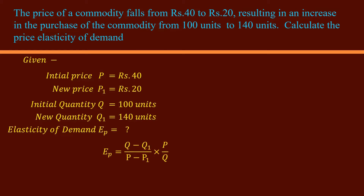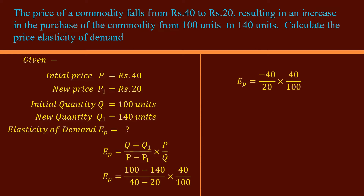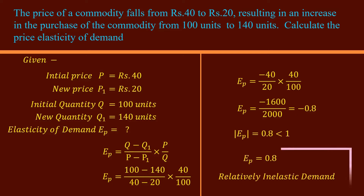State the formula. Substitute the values and simplify. (Q minus Q1) over (P minus P1) times P over Q: (100 minus 140) over (40 minus 20) times 40 over 100. The final value is minus 0.8. In calculating elasticity, we normally ignore the negative sign and take only the absolute value. It is 0.8, which is less than 1. Hence, relatively inelastic demand.